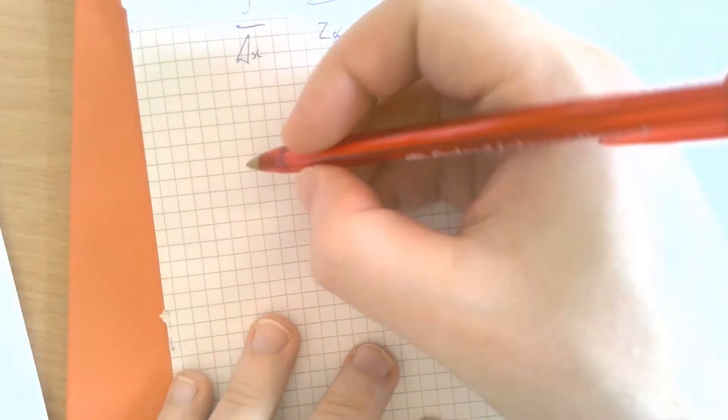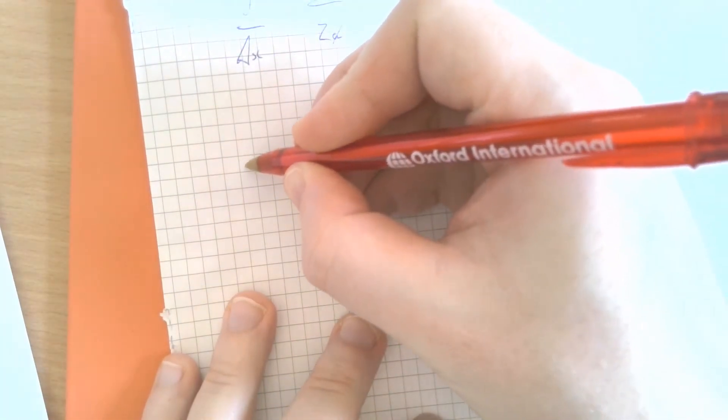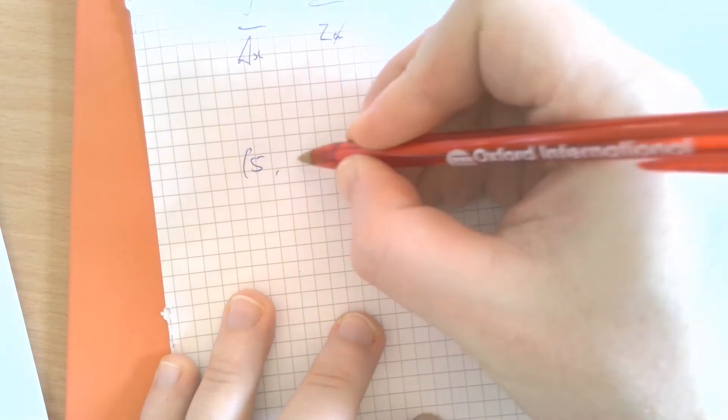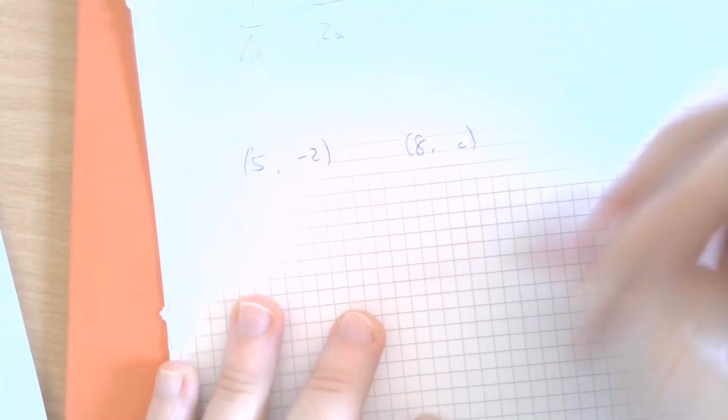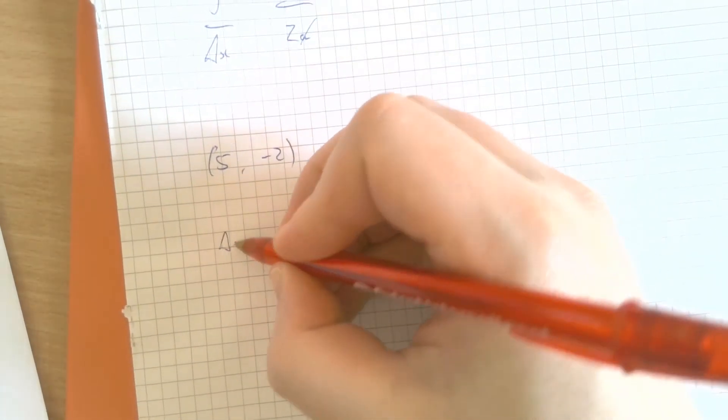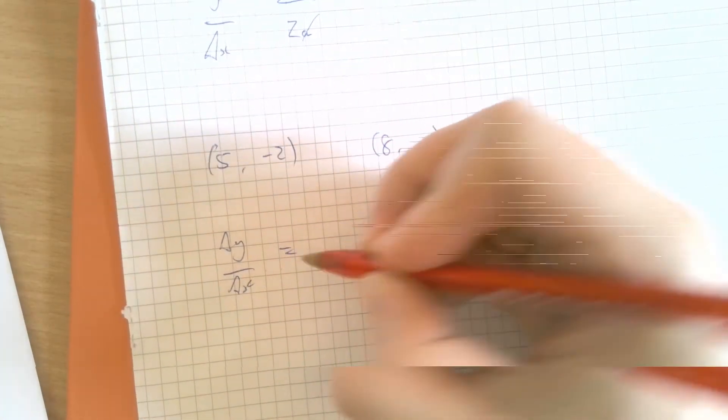Okay, so it's the same idea again. Let me write down these two coordinates: (5, -2) and (8, c). Change in y over change in x, same as always.